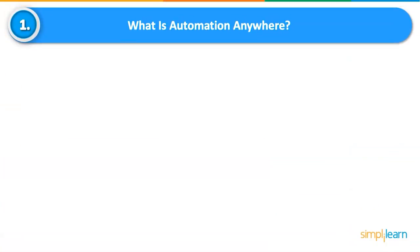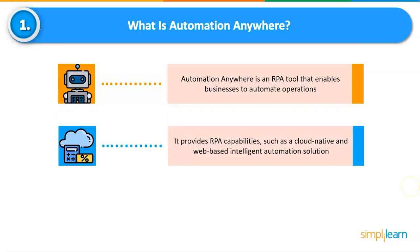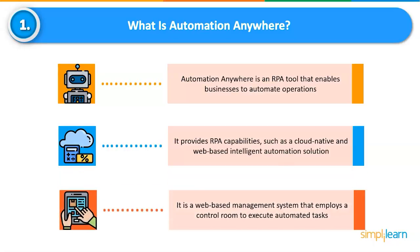What is Automation Anywhere? Automation Anywhere is a well-known robotic process automation tool that enables businesses to automate end-to-end business operations. It provides powerful and user-friendly RPA capabilities such as cloud-native, web-based intelligent automation solutions for automating any complex task. It is a web-based management system that employs a control room to execute automated tasks, improving the efficiency of business processes and reducing the need for human labor.